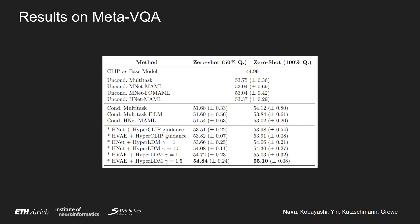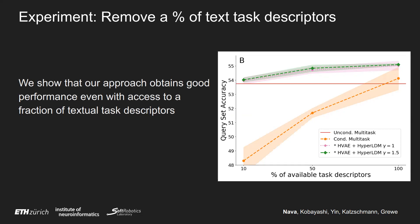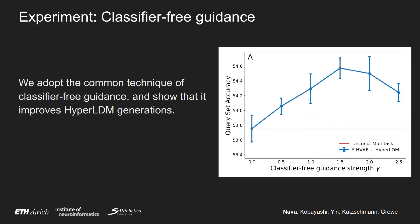We compare our techniques, along with variations and ablations, with state-of-the-art techniques like MAML and multitask baselines, and we show that our methods outperform them. Moreover, we perform an experiment by dropping a certain percentage of task descriptors from our dataset. We saw that even dropping 90% of the task descriptors and leaving only 10%, we still obtain good performance, due to our two-step process of first training a VAE and then the guidance procedure, while the conditional multitask baseline heavily suffers in these settings. We also test the classic technique of classifier-free guidance, common together with diffusion models, and show that even in our Hyper-LDM setting it improves generations.